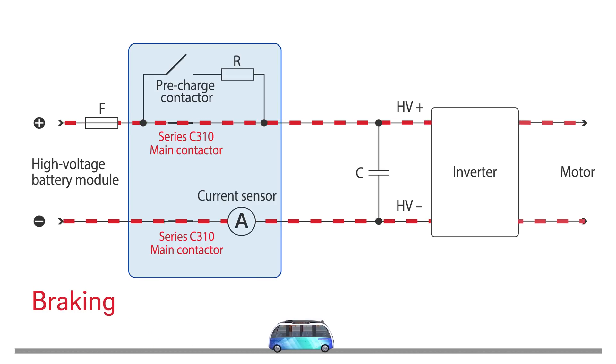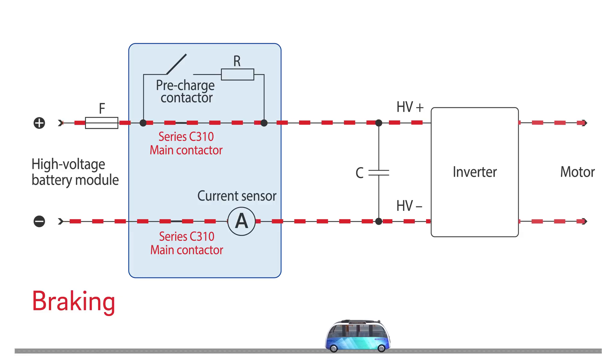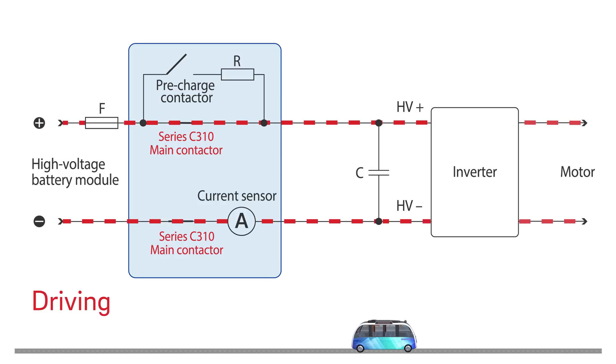Under braking, the propulsion engine becomes a generator. The C310 works bi-directionally. Recovered energy is stored in the battery.